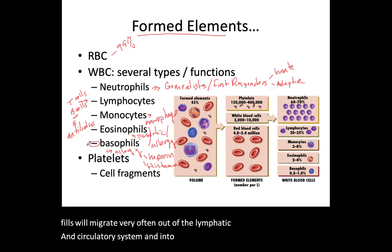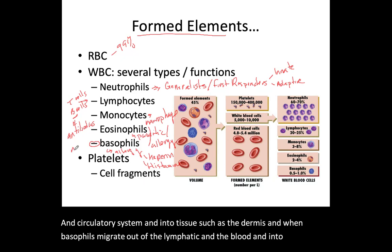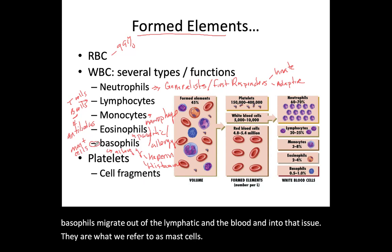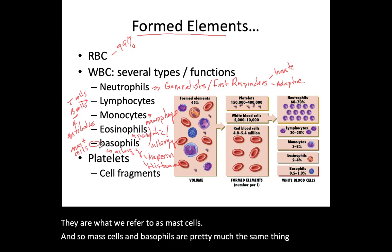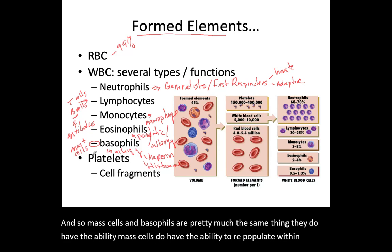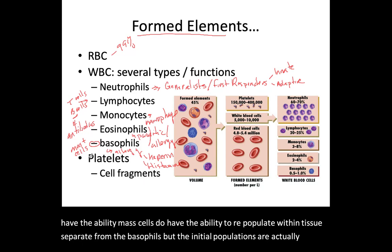When basophils migrate out of the blood and into tissue, they are what we refer to as mast cells. Mast cells and basophils are pretty much the same thing. Mast cells do have the ability to repopulate within tissue separate from the basophils, but the initial populations are created as basophils migrate outward.